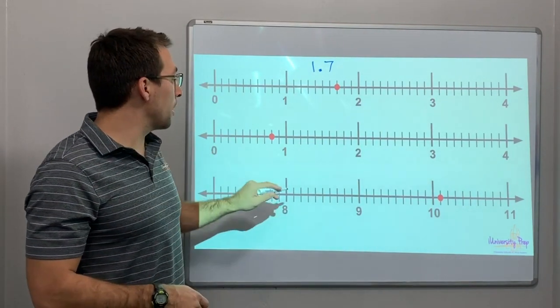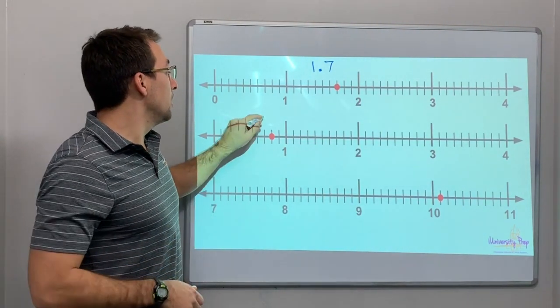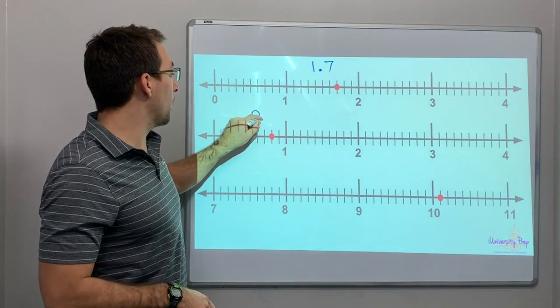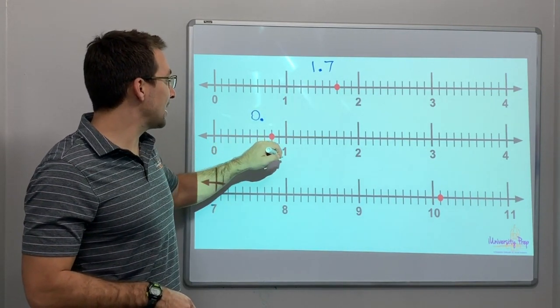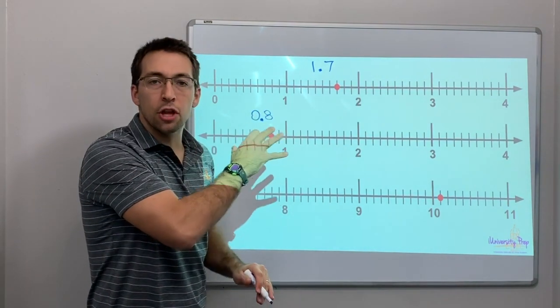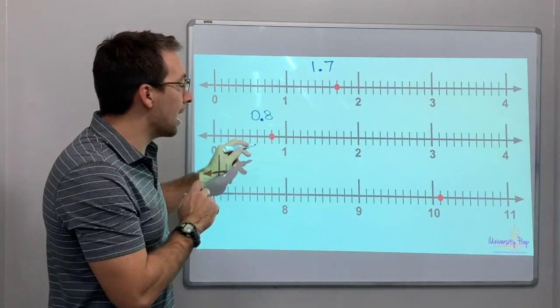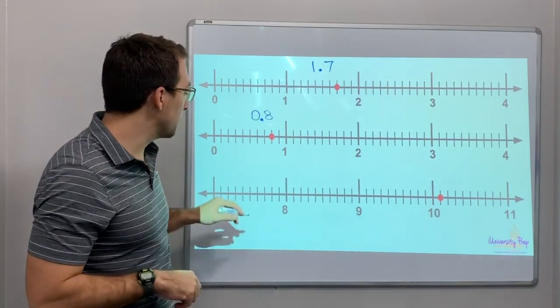So here's 0. Here's 1. We're less than 1. So it's going to be 0.1, 2, 3, 4, 5, 6, 7, 8. Decimals on the number line is just as simple as counting the ticks, counting the hash marks.